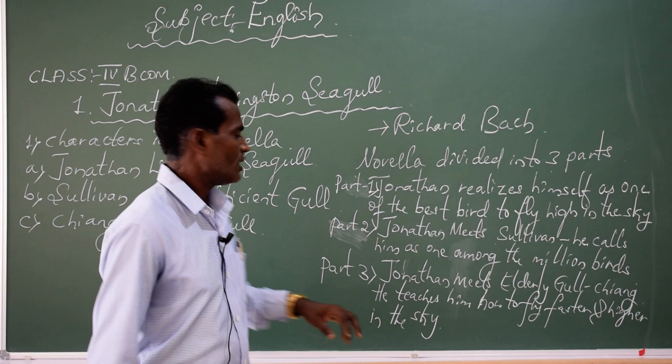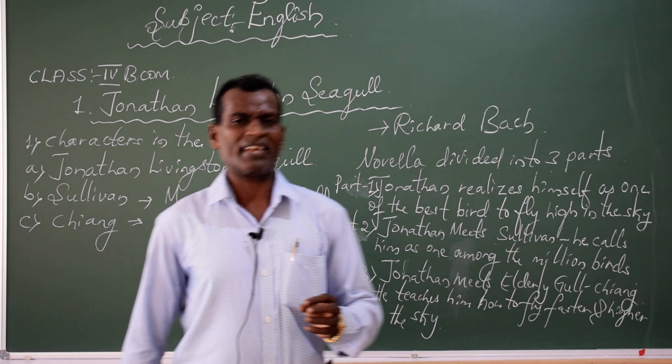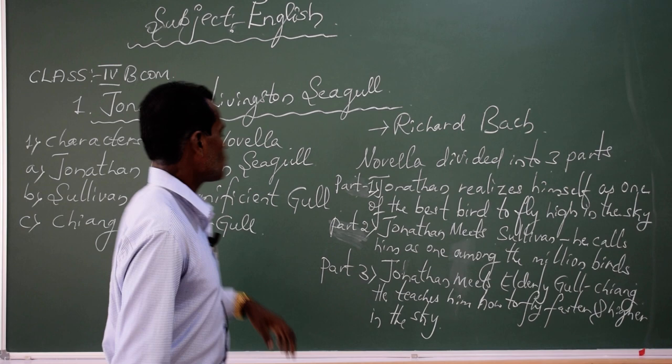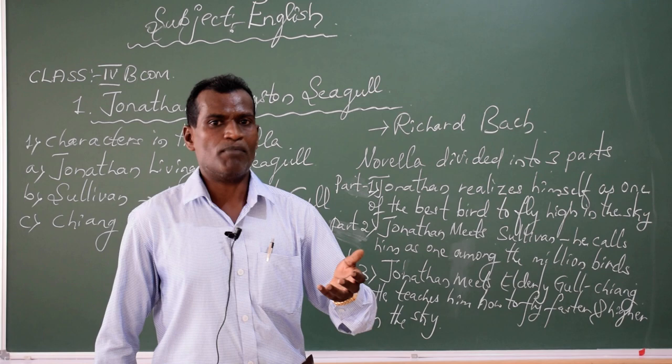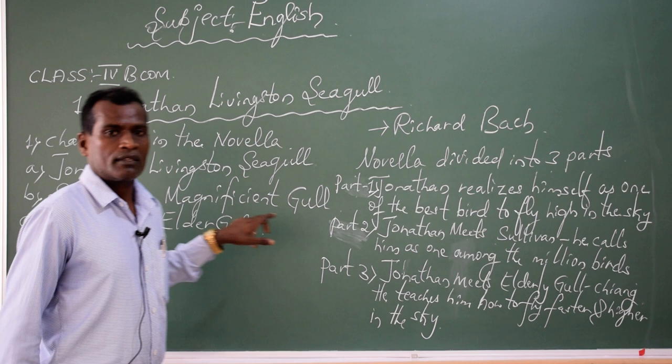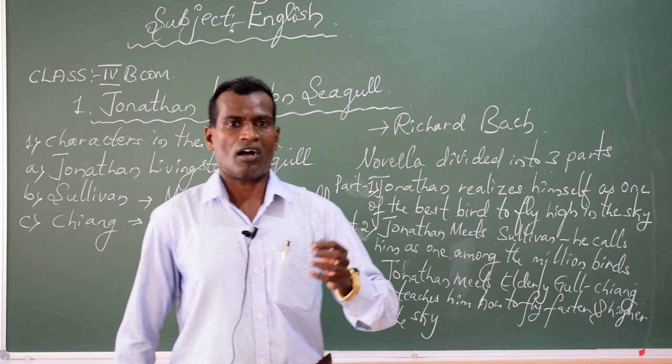One day, Jonathan Livingstone is flying very close to the seashore. Suddenly, he wants to meet a few other birds in the flock. That is Sullivan — also one of the magnificent gulls, a bird who tries to fly faster in the sky but fails many attempts. At the same time, the novella also introduces the last character, Chiang — also one of the elderly gulls who has become very old and is not able to fly high and fast in the sky.